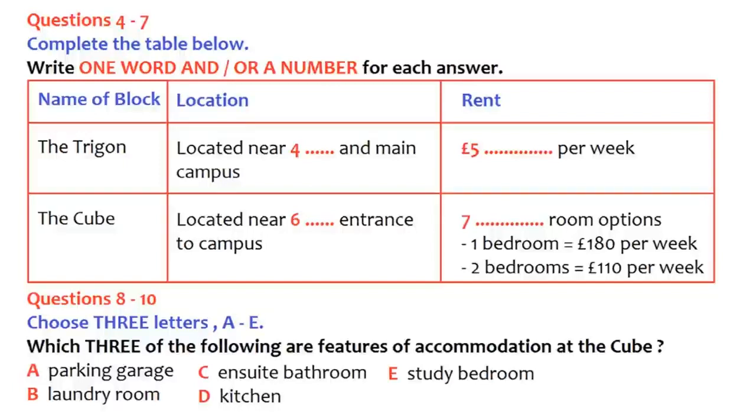So, the cube is self-contained. How does that work? Well, basically, they're just like ordinary apartments. Each apartment has one or two study bedrooms, with en-suite bathroom, a lounge and a kitchen. And what is the price of those? For the one bedroom, it is £180 per week, and for the two bedroom, it is £110 per week for each person.